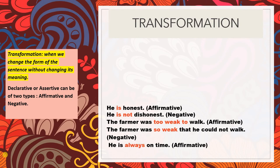'He is always on time' is an affirmative sentence — it affirms something positively. When transformed to 'He is never late,' the statement is negative in form but the meaning remains positive and unchanged. These are ways in which we transform the particular word that makes a statement affirmative or negative.